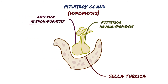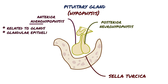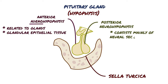Adeno means related to glands, and the adenohypophysis consists primarily of glandular epithelial tissue. In comparison, the neurohypophysis consists mainly of neural secretory tissue, since the neurohypophysis arises from a bud of nervous tissue that grows down from the hypothalamus.